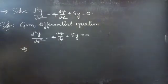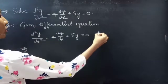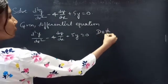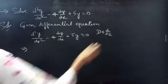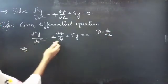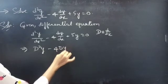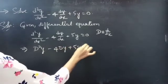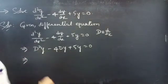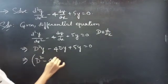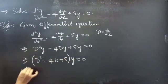Now we will write the given differential equation in operator form, differential operator D form. We know that d by dx is represented by capital D. Then you can write the above equation as D squared y minus 4Dy plus 5y equals to 0. Now we can take y common from all these terms, and you will get D squared minus 4D plus 5 into y equals to 0, which is the operator form.